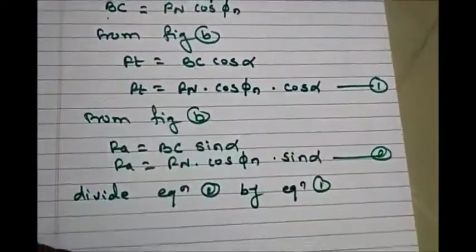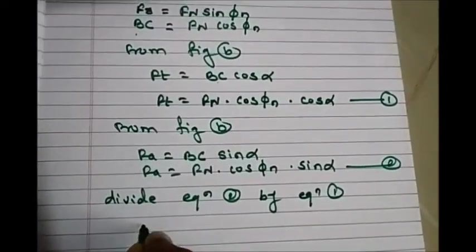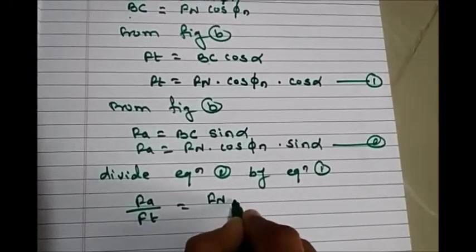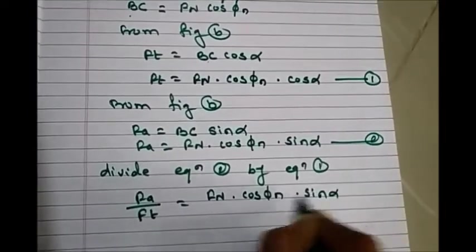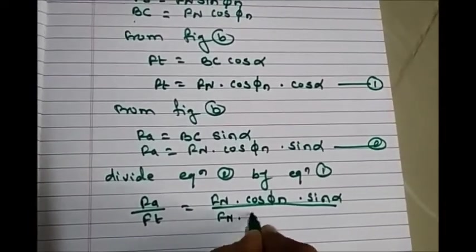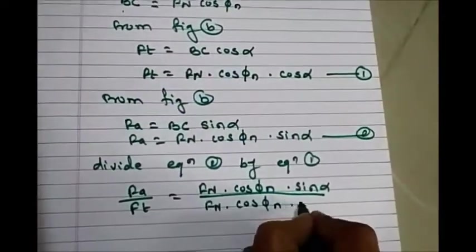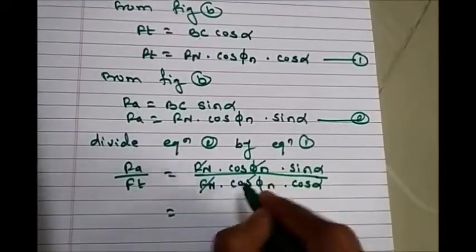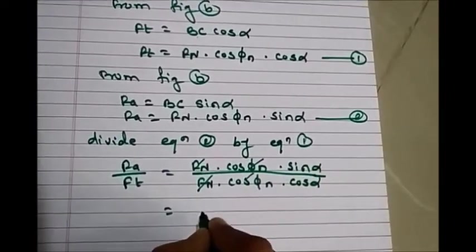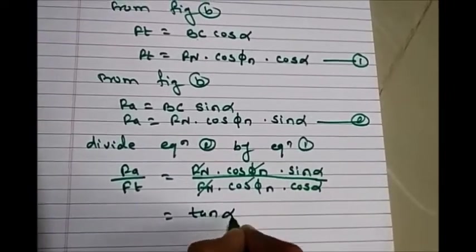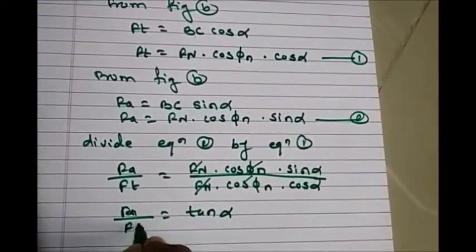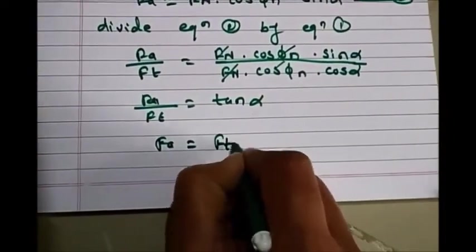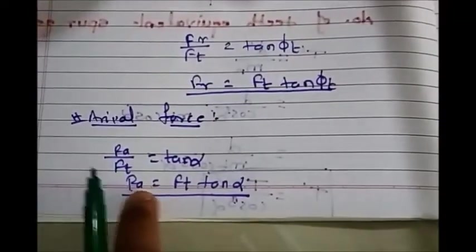Dividing equation 2 by equation 1: FA/FT equals [FN × cos(φN) × sin(α)] divided by [FN × cos(φN) × cos(α)]. The FN and cos(φN) terms cancel, giving FA/FT equals sin(α)/cos(α) equals tan(α). So FA equals FT × tan(α), which confirms the earlier result.